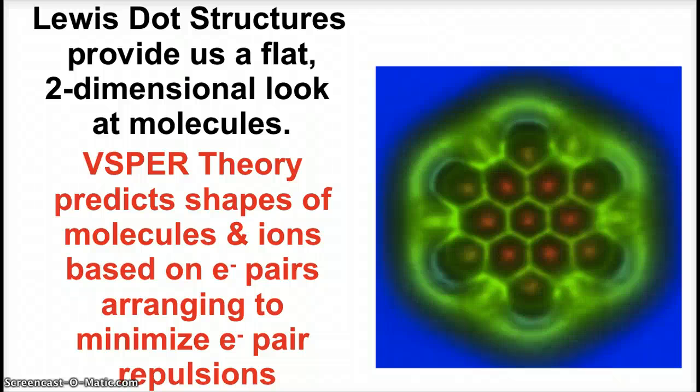Lewis dot structures give us a great look at how atoms are connected to form a molecule. They provide a two-dimensional view. VSEPR, which stands for the valence shell electron pair repulsion theory, predicts the shapes of molecules or polyatomic ions based on electron pairs arranging themselves to minimize repulsions.